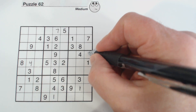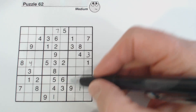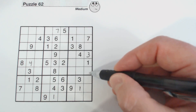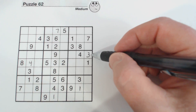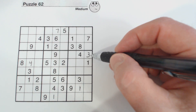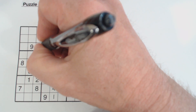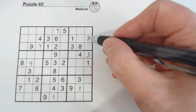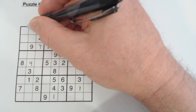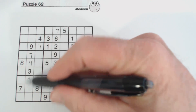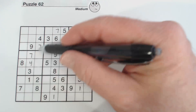Then I put a three here because we've got a three here, a three here, which leaves these two places, and there's a three there already. Seven goes there because there's a one there, one there, and one there already — only one place for a seven in that box because of these two sevens.